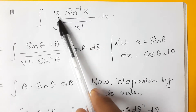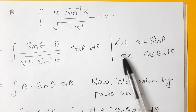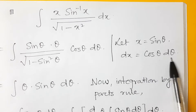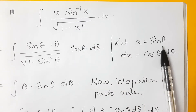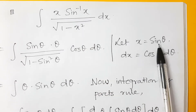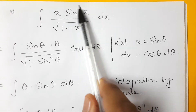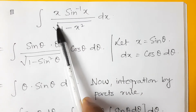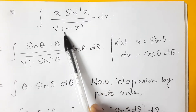First, we will substitute x by sin θ. If you differentiate this, dx = cos θ dθ. We are taking x = sin θ because sin⁻¹(x) will then equal θ, so that term will be replaced. Also, in the denominator there is a root of 1 minus x squared.